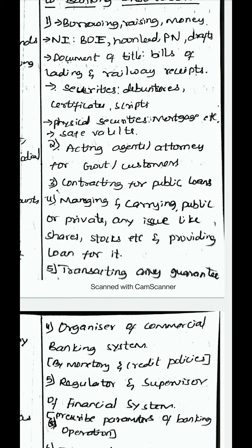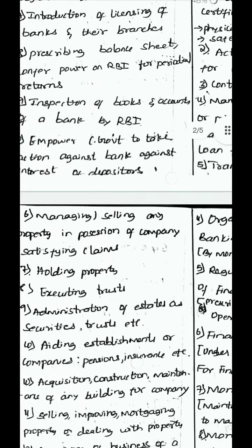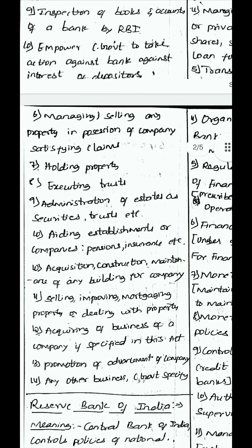Banks can act as agent or attorney for the government or customers. They can contract for public loans — entering into contracts with the public for loans. They can manage and carry any public or private issue like shares and stocks, and provide loans for it. So if an individual is investing in shares or stocks, a bank can manage them and give loans. They can transact any guarantee service, and manage or sell any property in possession of the company to satisfy claims. A bank can also hold property.